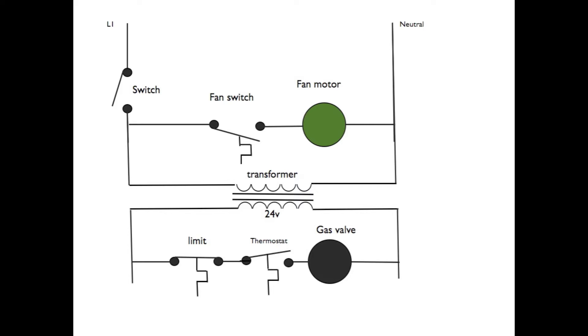We've got 120 volts in the upper part of the diagram, and then we've got a transformer that converts the 120 volts into 24 volts for the control circuit. So we've moved a lot of the controls down into the 24-volt circuit.